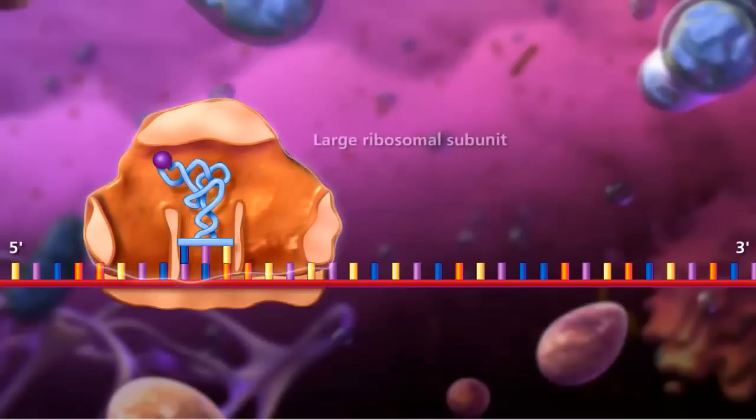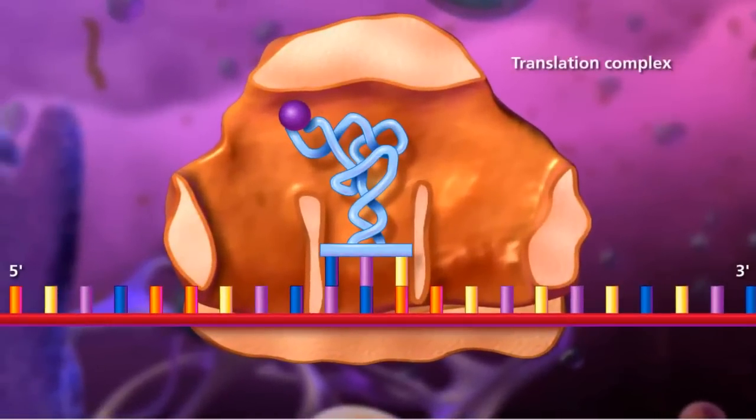After the initiator transfer RNA molecule binds to the start codon, the large ribosomal subunit binds to form the translation complex and initiation is complete.